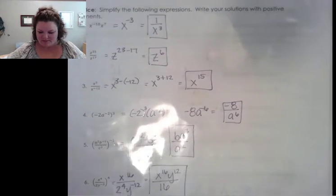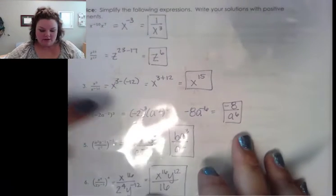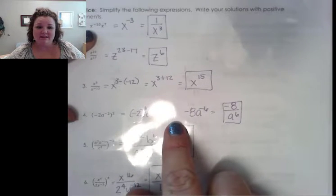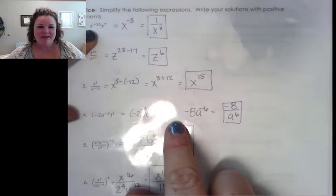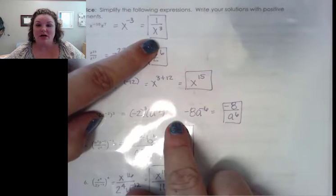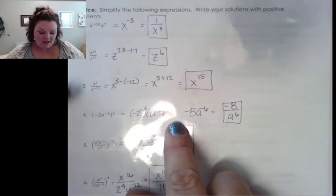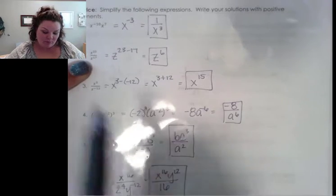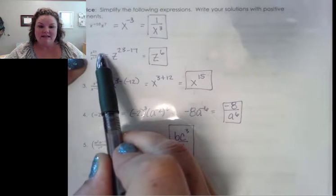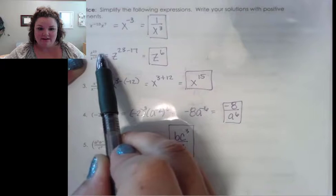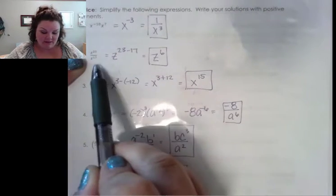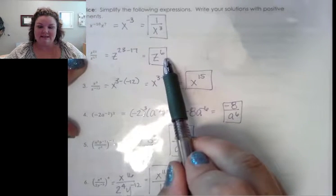We're going to go ahead and go over them. The first one: x to the negative 10 times x to the 7th — we combine the exponents, which gives us x to the negative 3, and then take it to the denominator so that we get a positive exponent on that x. Number 2: I took the z to the 17th up to the top, which gives me z to the negative 17. Combining the 23 exponent and the negative 17 gives z to the 6th.